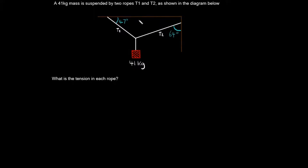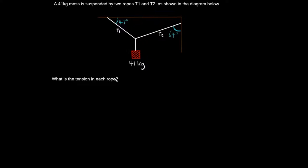In this video, I will be solving multiple static equilibrium problems. In this problem, we are asked: a 41 kg mass is suspended by two ropes, T1 and T2, as shown in the diagram. The ropes are at angles of 64 degrees to the vertical and 47 degrees to the horizontal, with the 41 kg mass suspended between them. We are first asked: what is the tension in each rope? The first thing we want to do is draw a free body diagram.